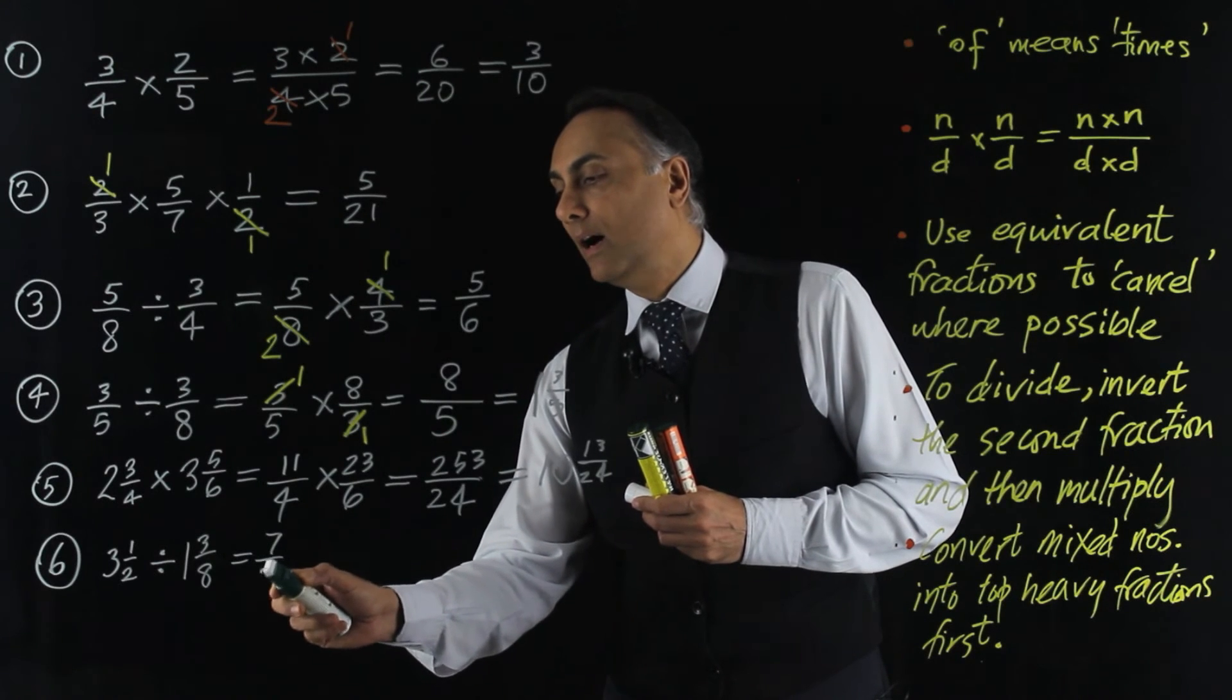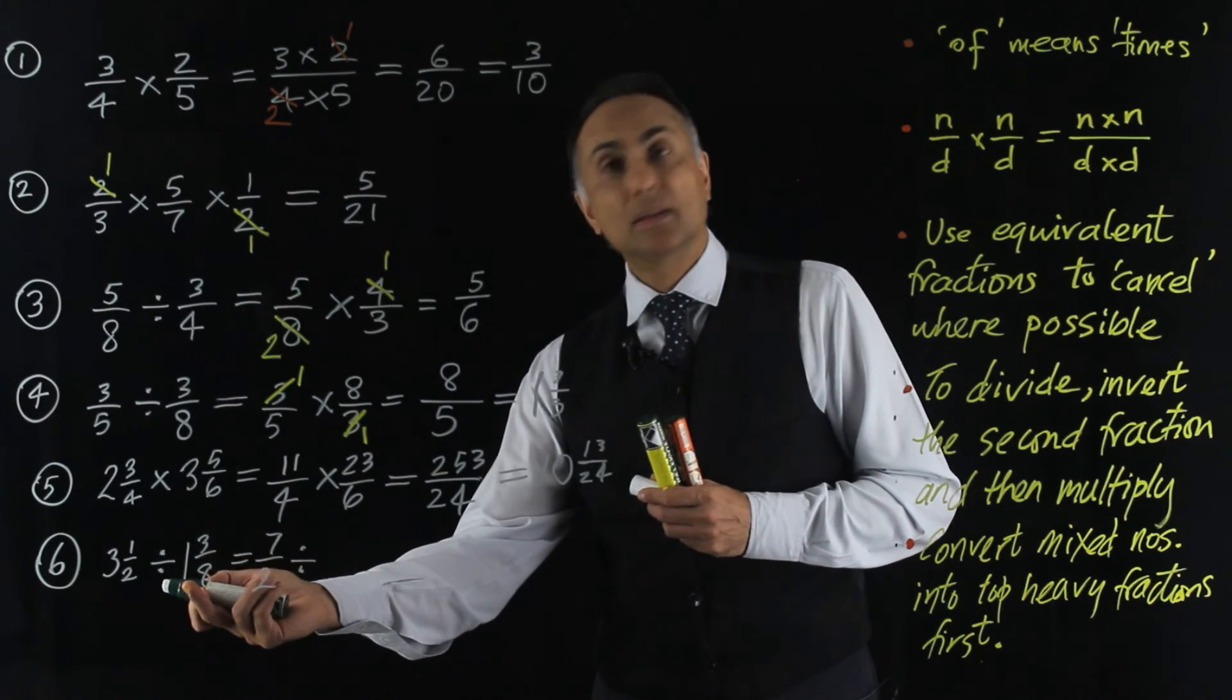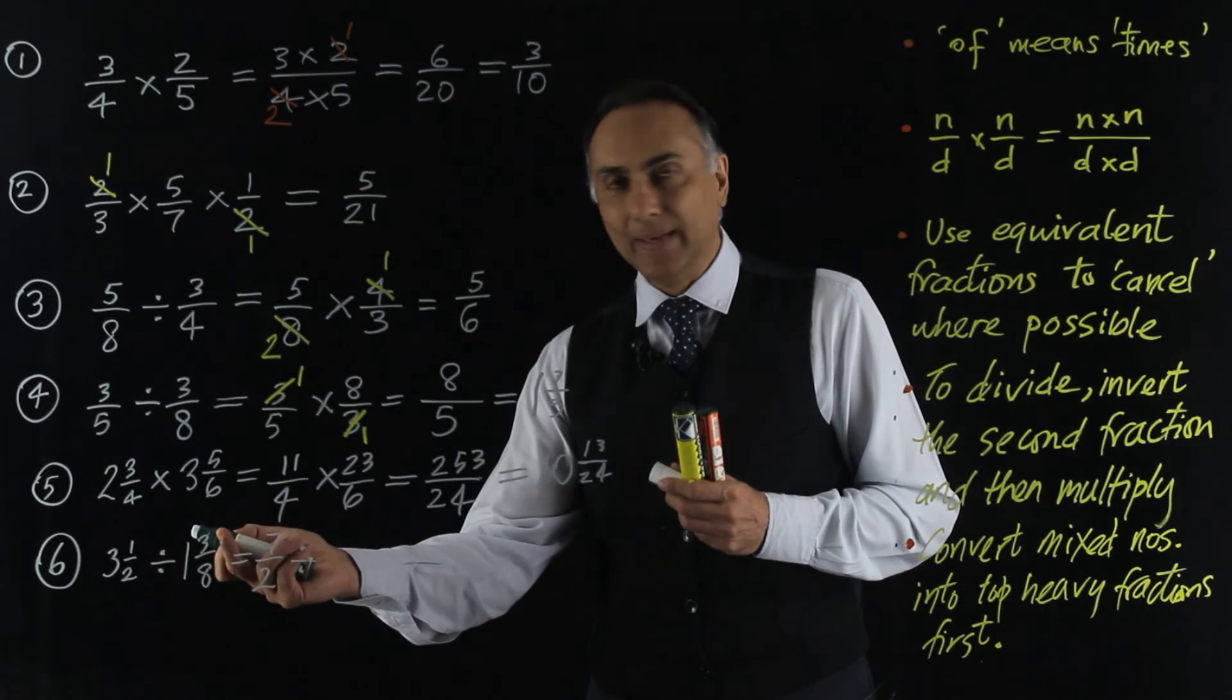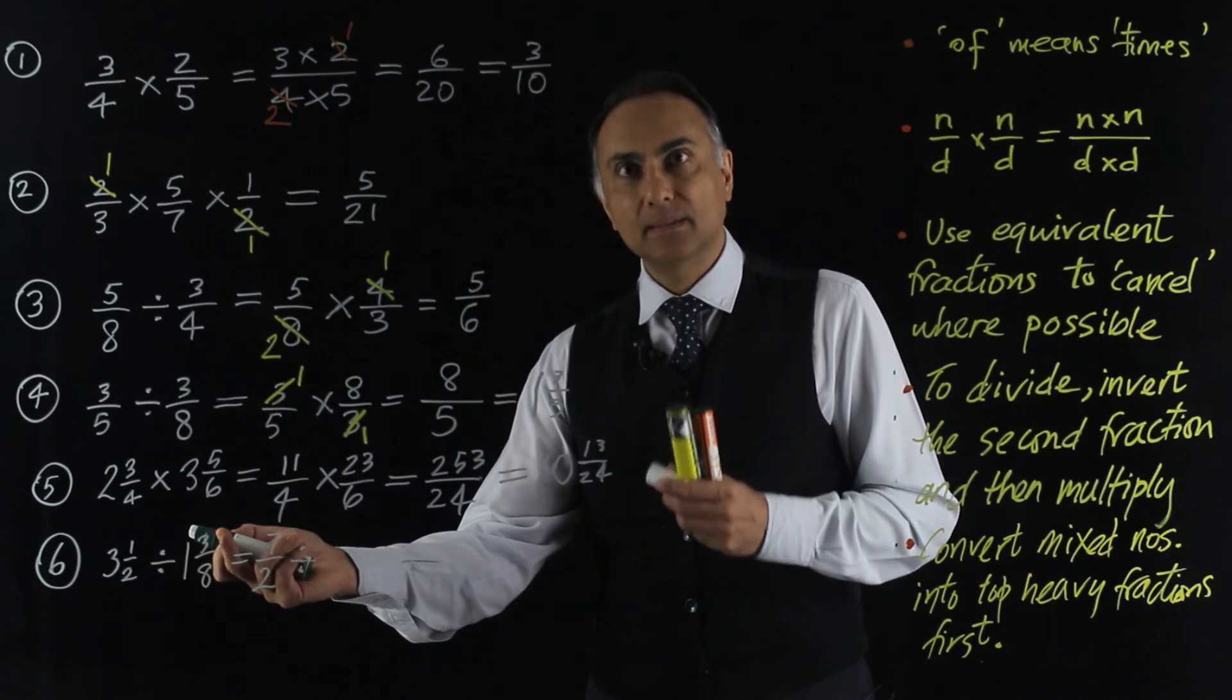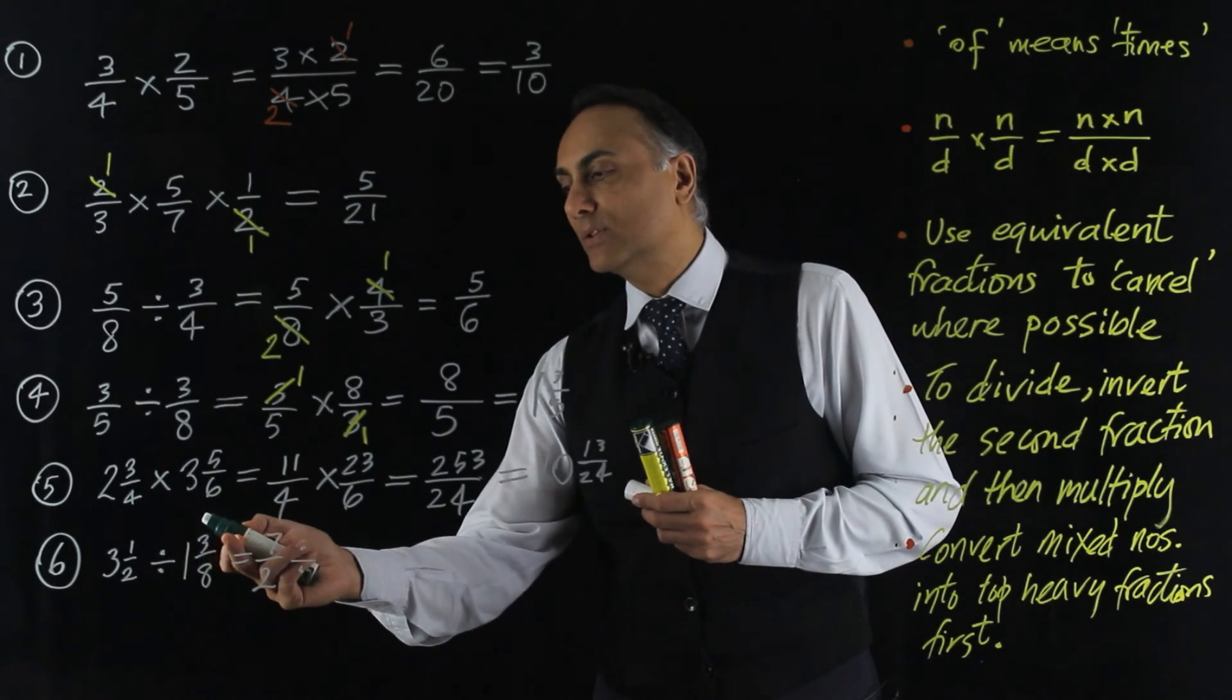So that's seven halves divided by... The whole is 8 eighths plus another 3 eighths makes 11 eighths. Again, to show you the quick way. Eight ones are eight plus three is 11. So it's 11 eighths.